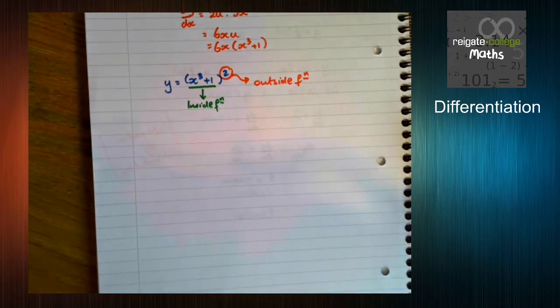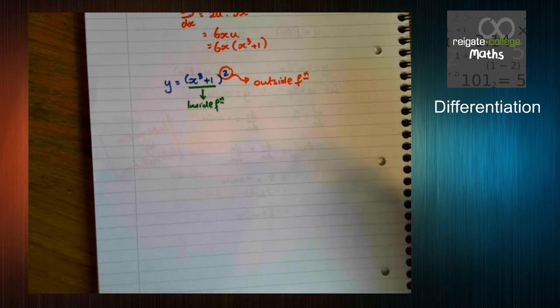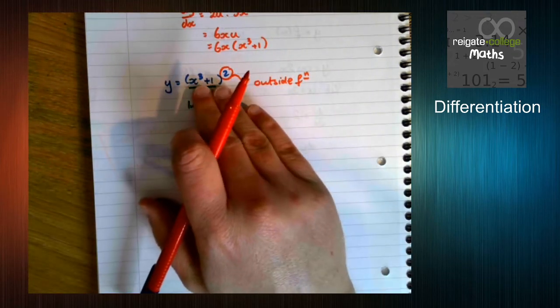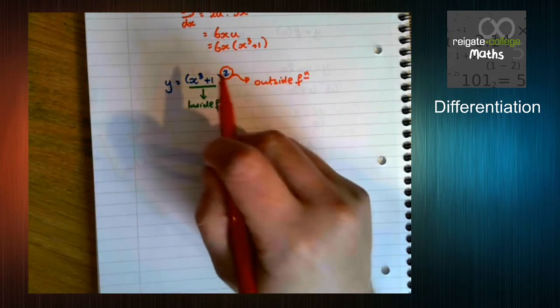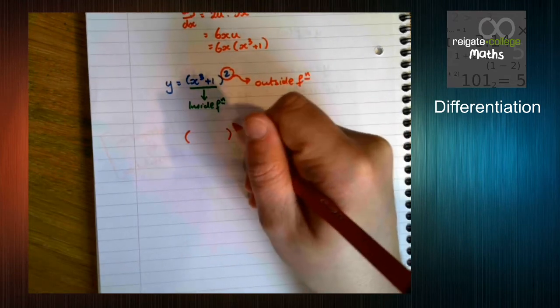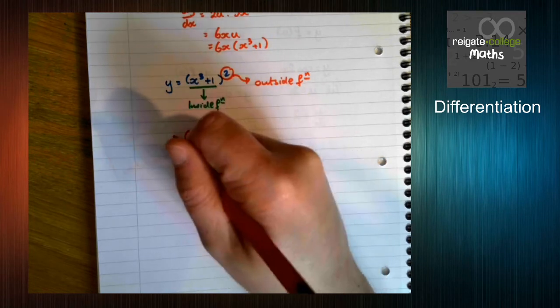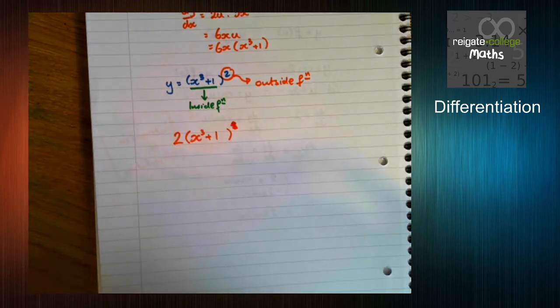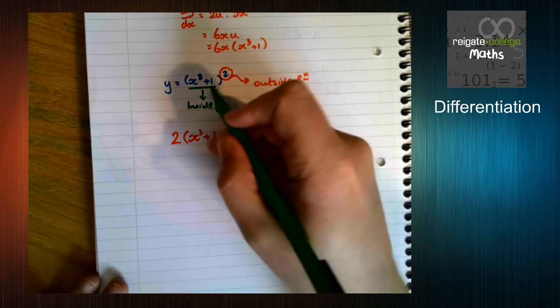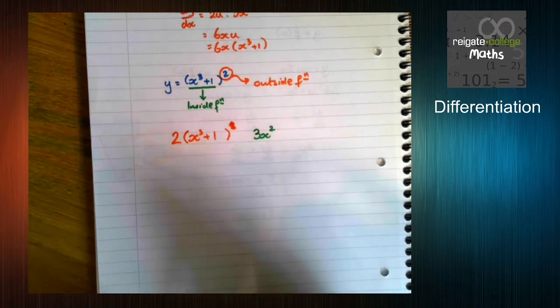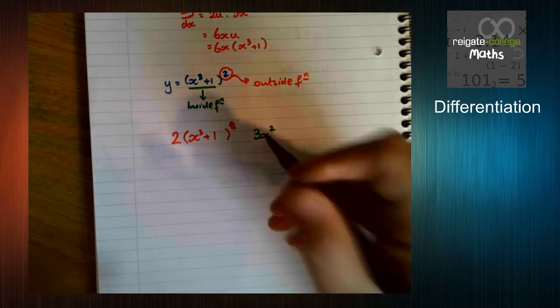So what you're going to do in your head is differentiate the outer function. So we're going to think, if I differentiate the outside function, regardless of what's in here, this is a normal something with a power. So we're going to do multiply by the power, reduce the power by 1. So differentiating the outside function, we multiply by the power, reduce the power by 1, and then everything else just stays the same. So we differentiate the outside function. We then differentiate the inside function. So x cubed plus 1 differentiates to 3x squared.